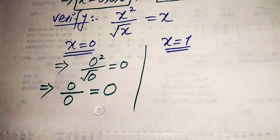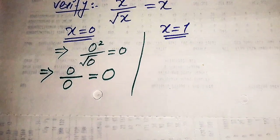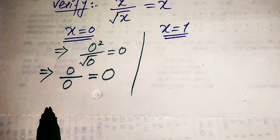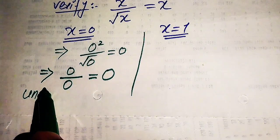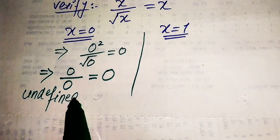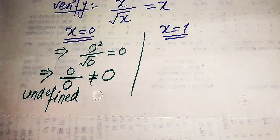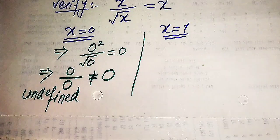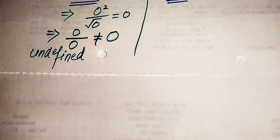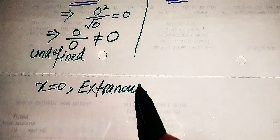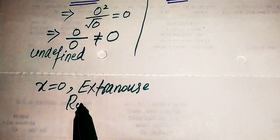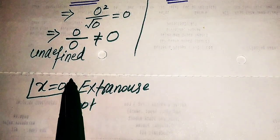The left hand side becomes 0 over 0, which is the indeterminate or undefined form. Since the left hand side is undefined, both sides are not equal. Therefore x equals 0 does not satisfy the given equation, and we conclude that x equals 0 is an extraneous root.